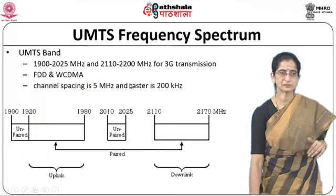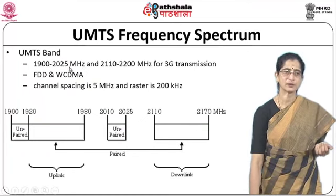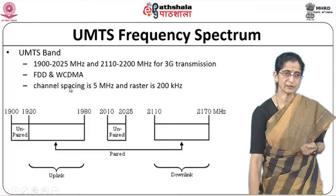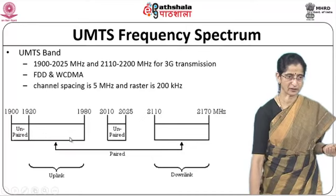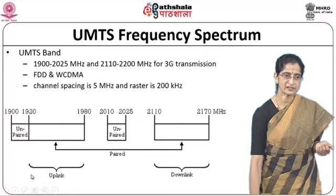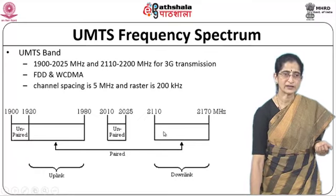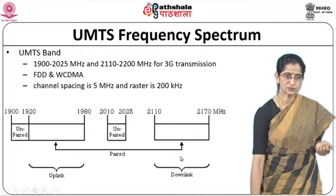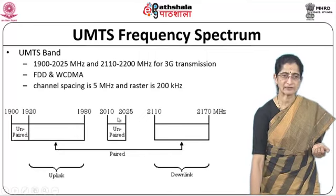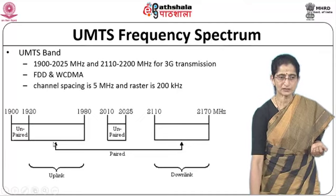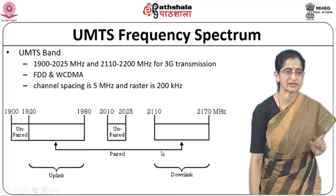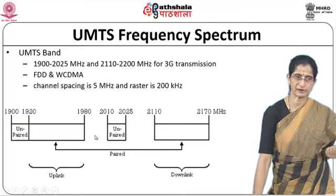Looking at the UMTS frequency spectrum, we have two different bands: 1900–2025 MHz and 2110–2200 MHz for 3G transmission. It uses FDD and WCDMA, with channel spacing of 5 MHz and a raster of 200 kHz. The band 1900–1980 MHz is used for uplink and 2010–2170 MHz for downlink. You can have a paired set of channels — using one frequency for uplink and corresponding frequency for downlink — or an unpaired frequency band.